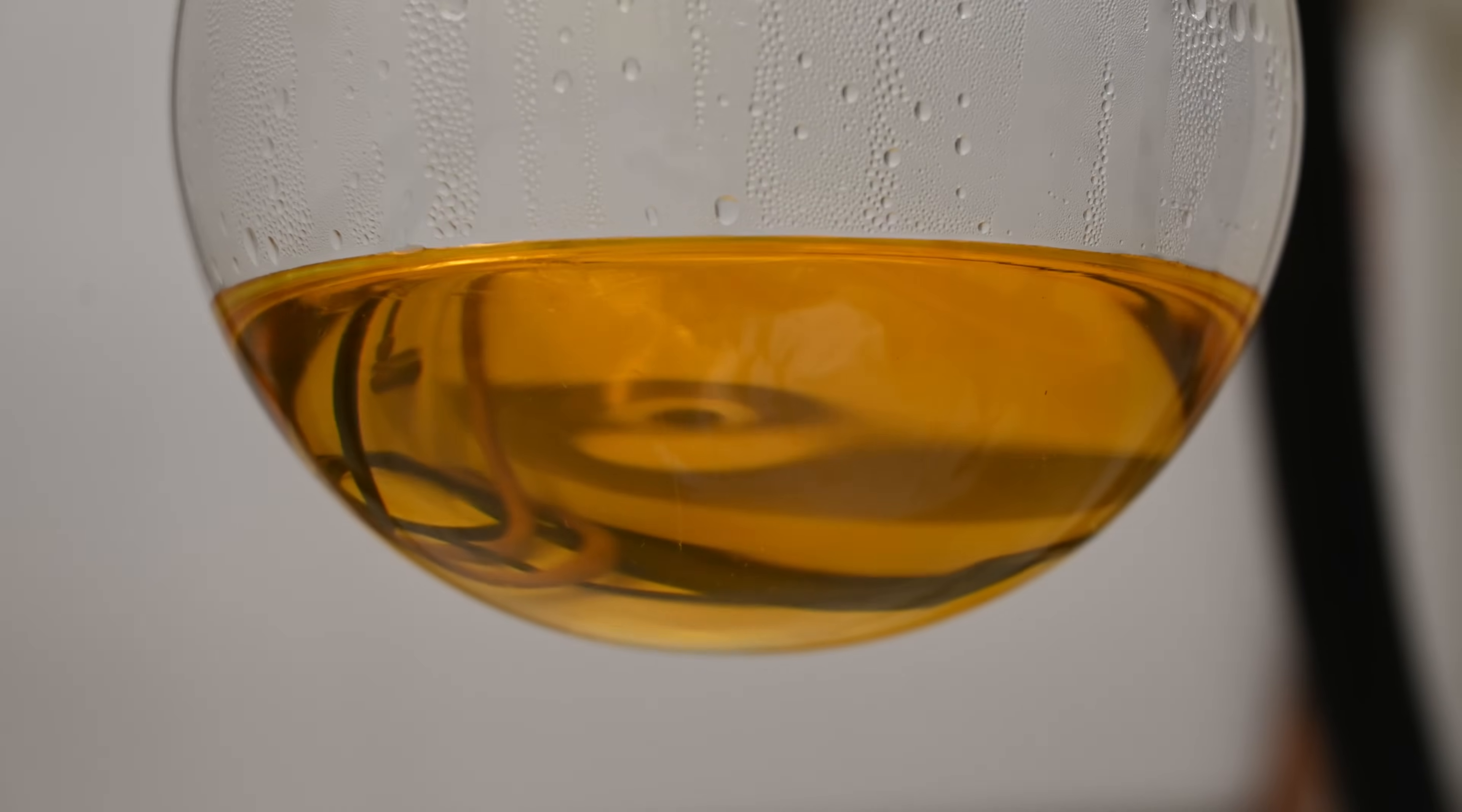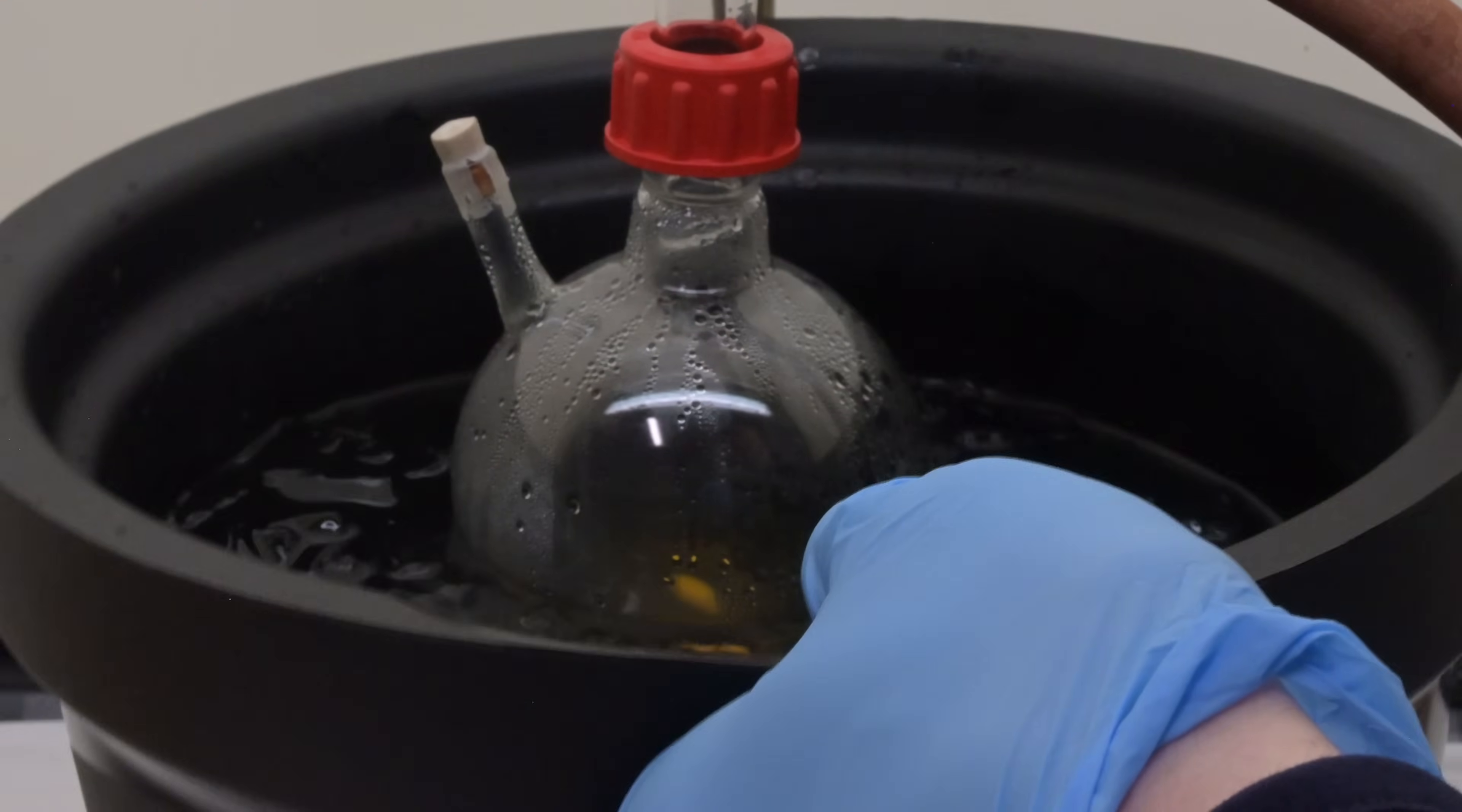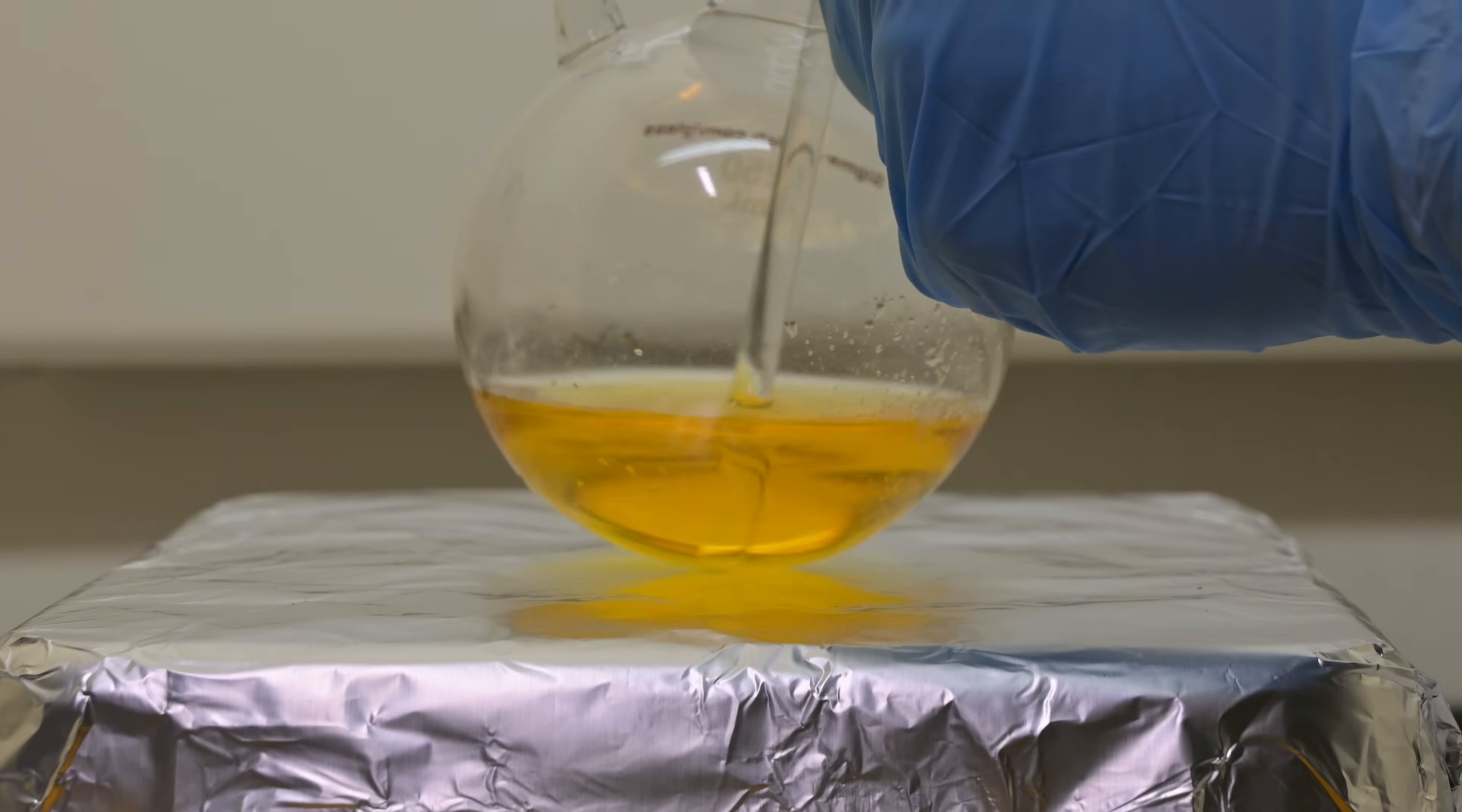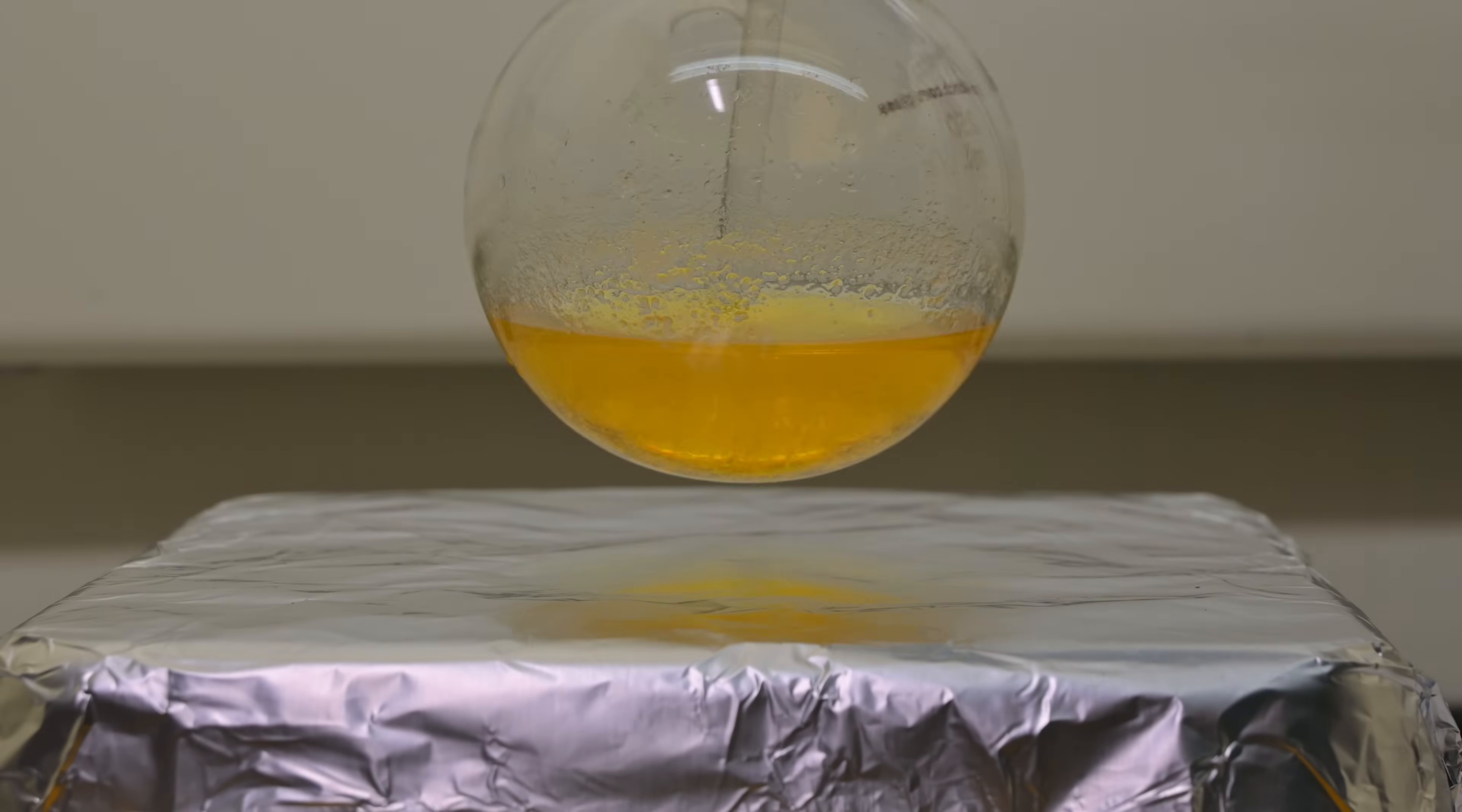After 90 minutes, we remove the flask from the hot water bath, allowing the mixture to cool. To further encourage crystallization, we place the flask into an ice water bath. I tried swirling, but no crystals. So a trick is to scrape the bottom of the flask with a stirring rod to promote crystallization. It does this by creating nucleation sites, places where crystallization can start.